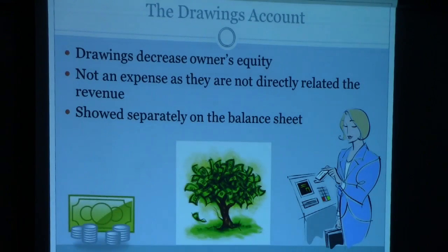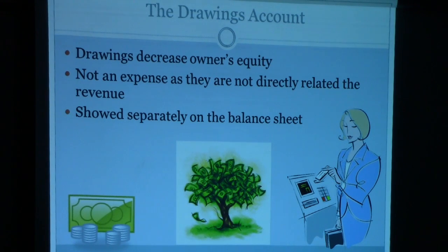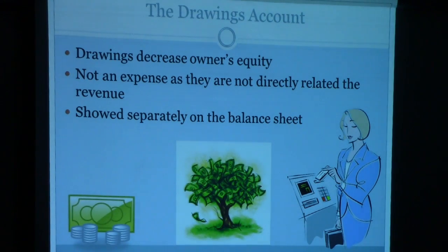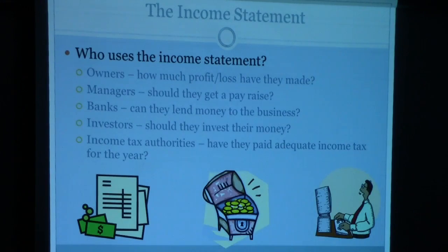The drawings account decreases owner's equity. It works similarly to the expense accounts — when you debit it, it increases; when you credit it, it decreases. So it works opposite to the equity account.